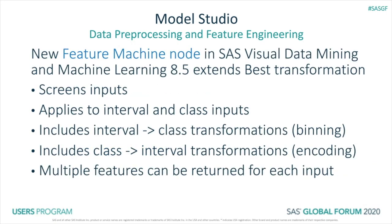In addition to the numeric transformations that are performed for the best transformation, this new Feature Machine node can first screen out uninformative inputs, perform multiple sets of transformations that can include imputation to create new features from each input, and extend the numeric transformations to include conversions such as binning to transform an interval input into a class input, encoding to transform class inputs into interval inputs, and based on the criterion, it will rank the new features created by these sets of transformations and return one or more features per input as specified by you, the user.